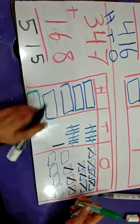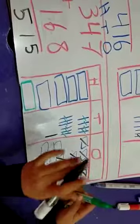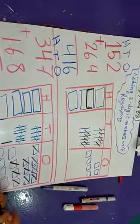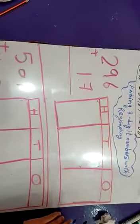515. Adding 3-digit numbers with regrouping. Now let's take some examples from our sheet.